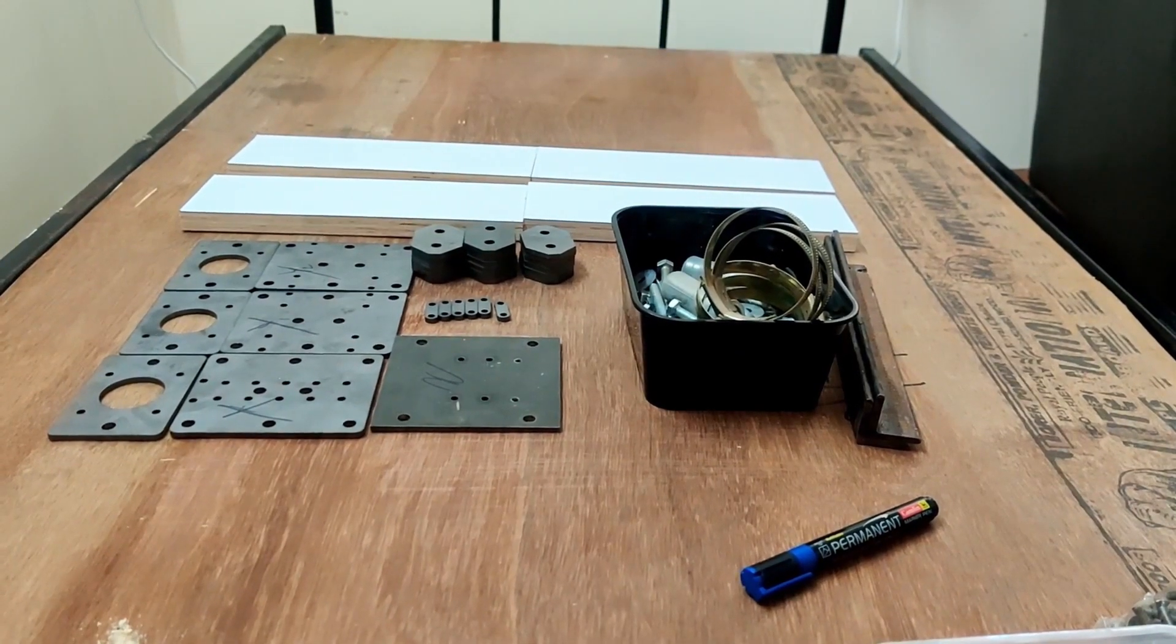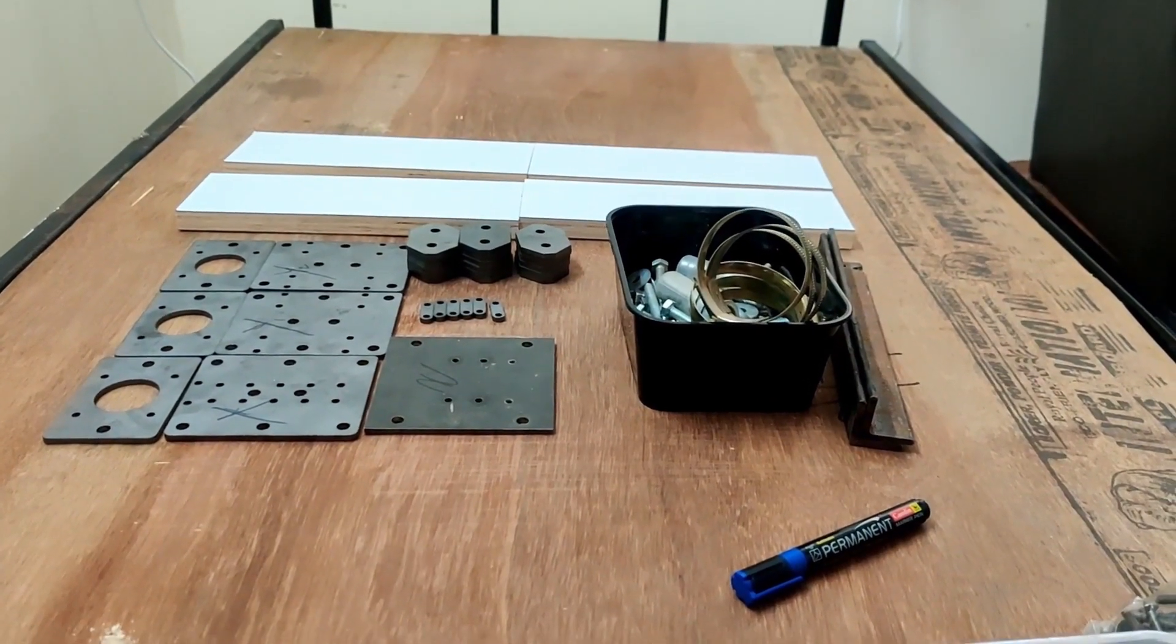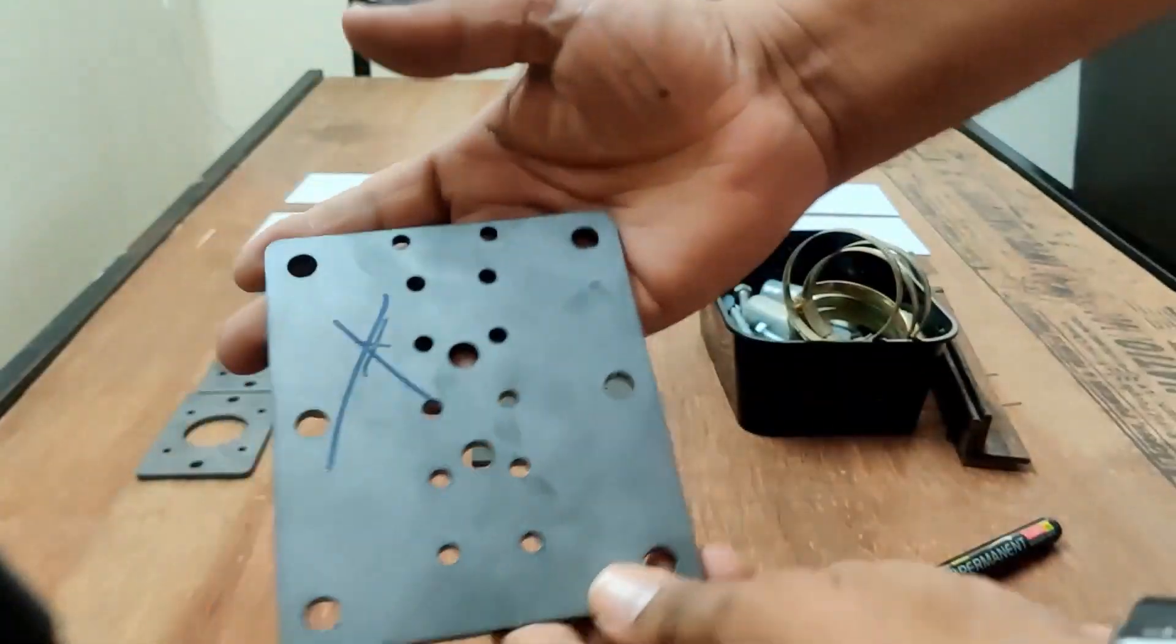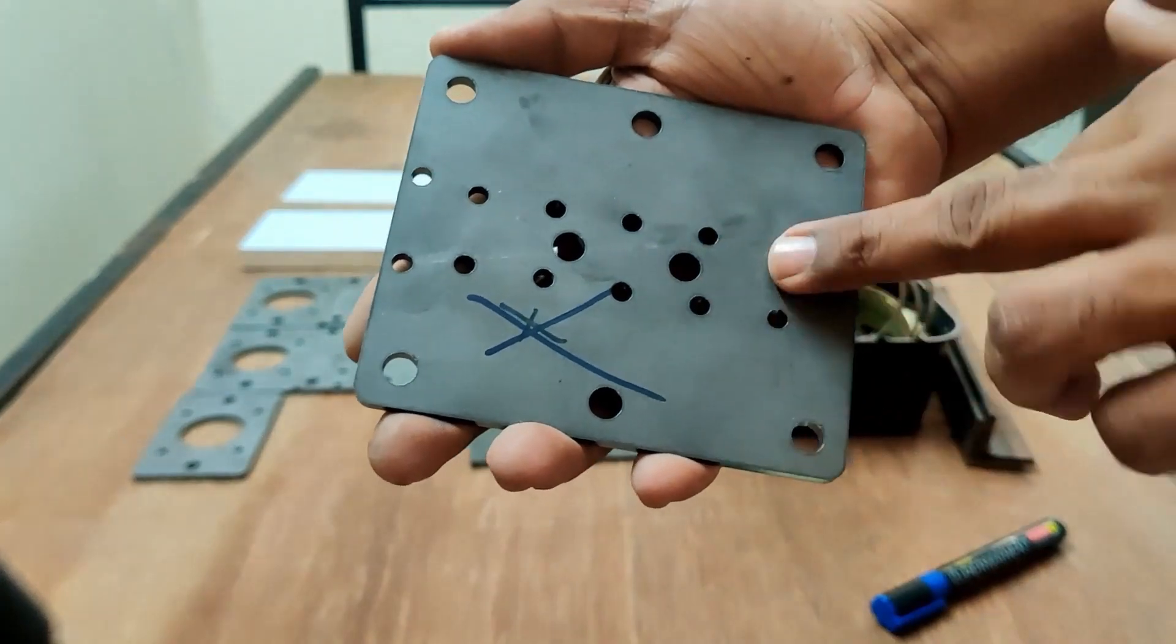So let's go over the parts I'm going to use. This is all the hardware I'm going to use for X axis, Y axis, partly for Z axis also. Other than this I'm going to use a lead screw setup for Z axis which I will cover later.